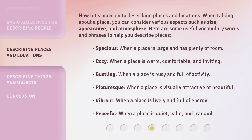Now, let's move on to describing places and locations. When talking about a place, you can consider various aspects such as size, appearance, and atmosphere. Here are some useful vocabulary words and phrases to help you describe places. Spacious — when a place is large and has plenty of room. Cozy — when a place is warm, comfortable, and inviting. Bustling — when a place is busy and full of activity. Picturesque — when a place is visually attractive or beautiful.